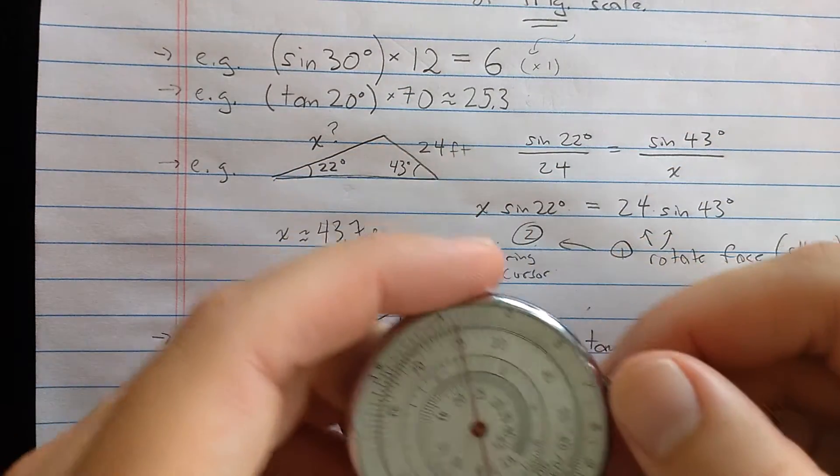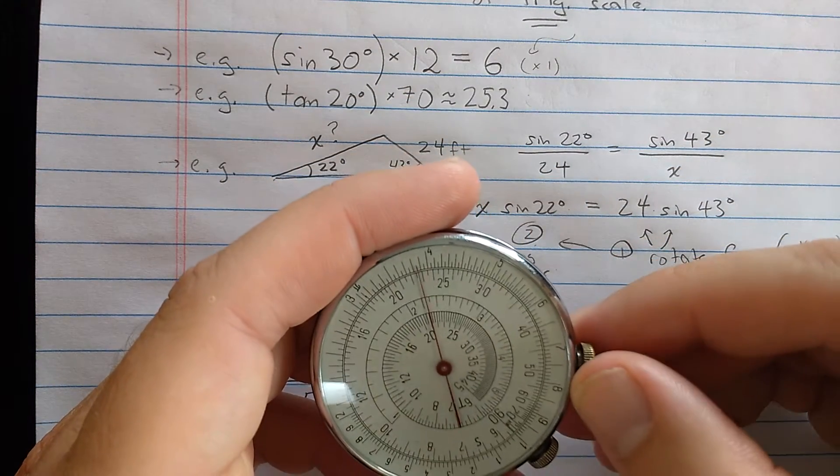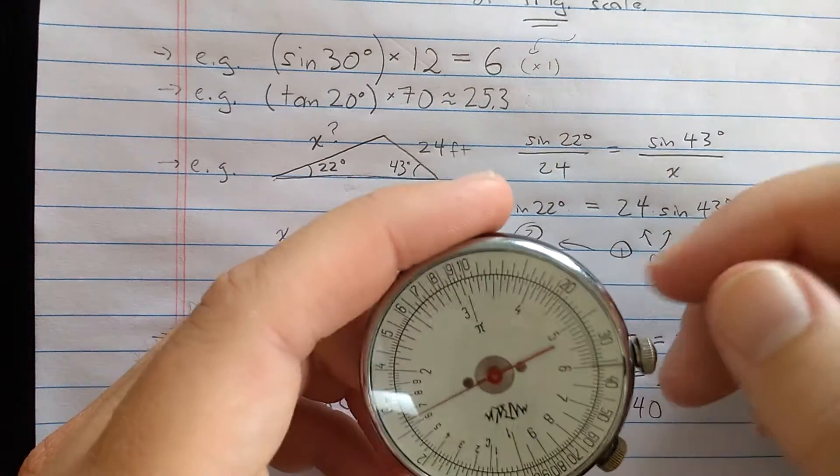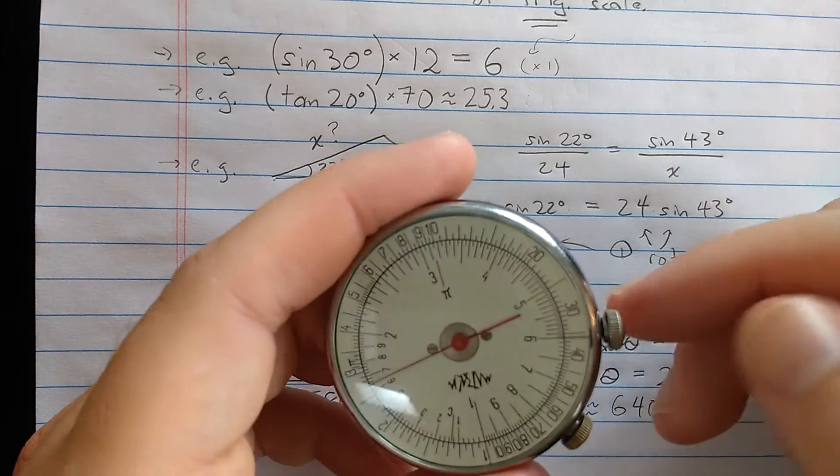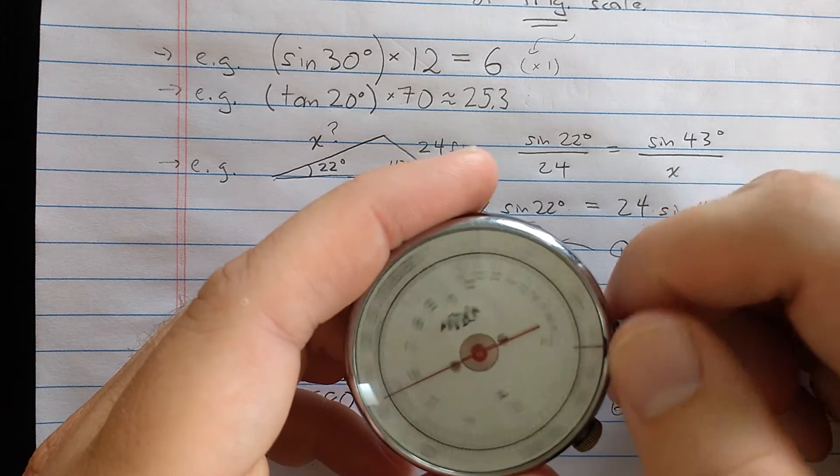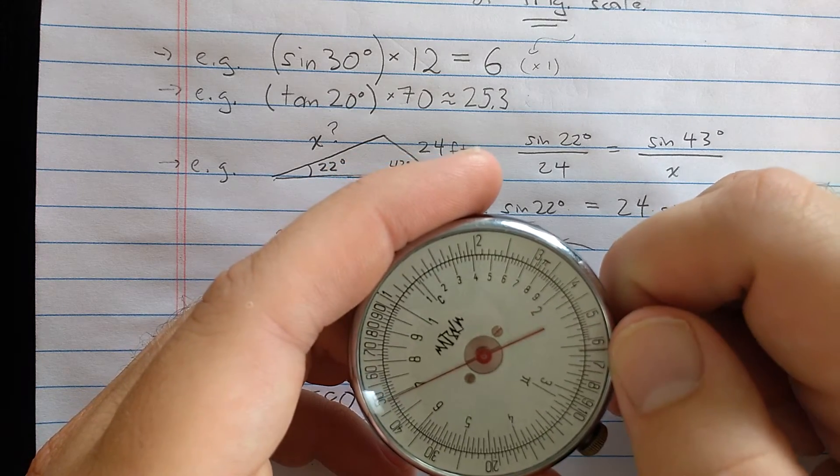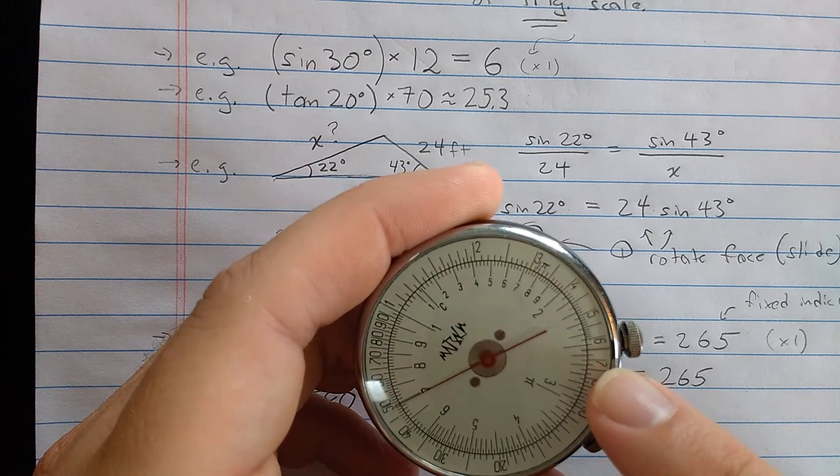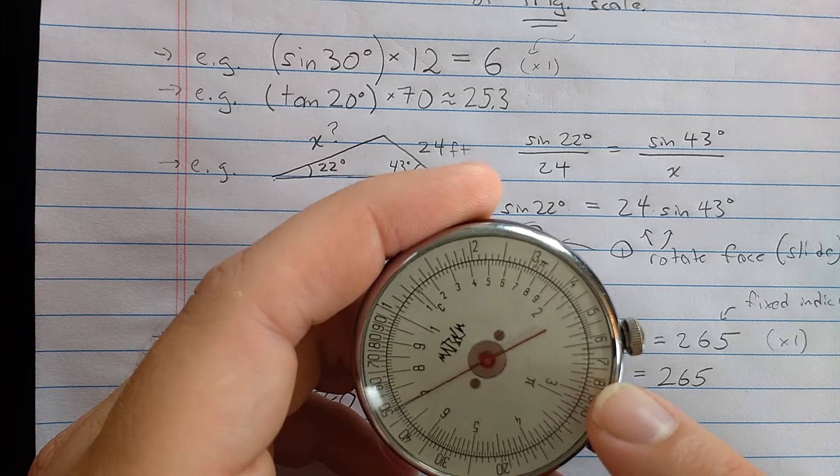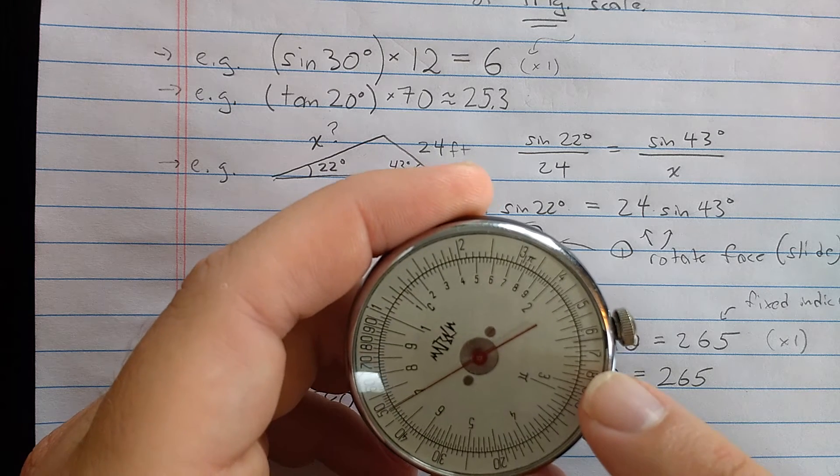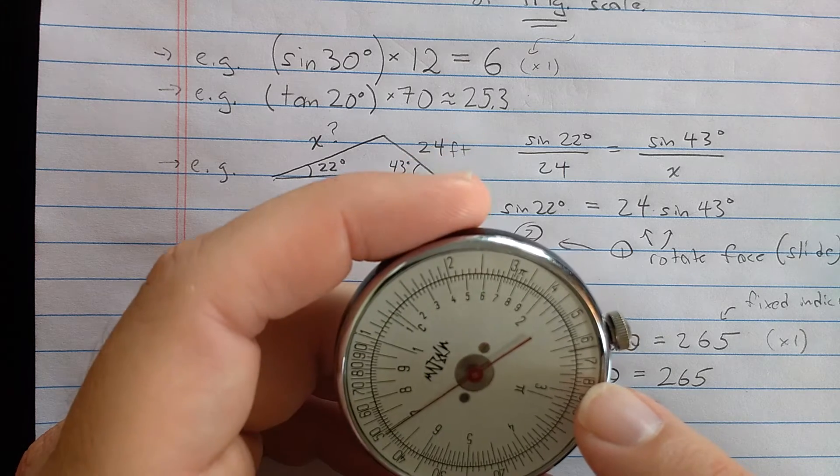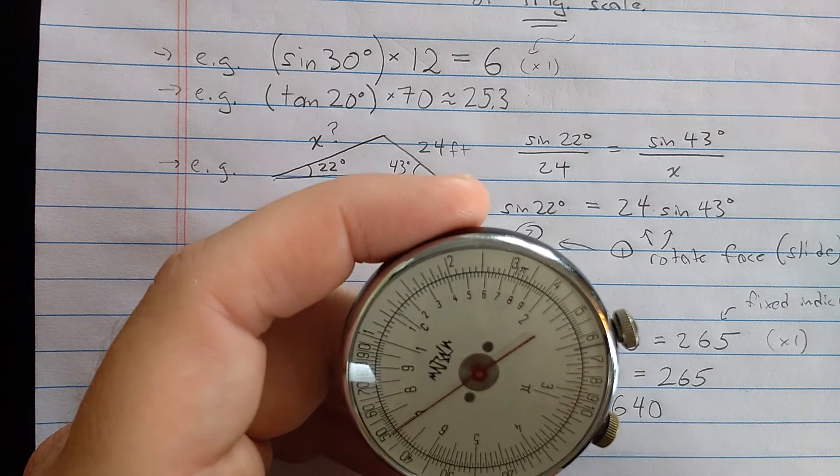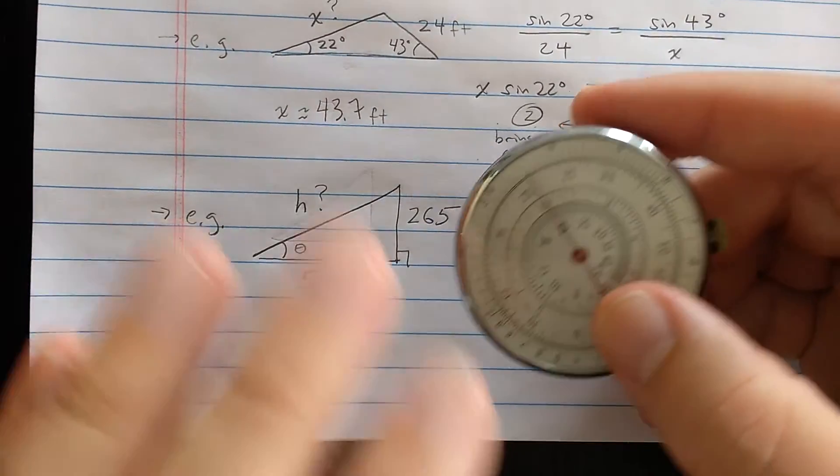Let's do a tangent. I want to do tangent of 20 degrees. I look at the tangent scale, I find the 20. Then I flip. I want to multiply by 70, so I slide the slide rule here so the 70 is under the needle. Then the result is under the indicator, about 25.3. It looks more like 25.5 now.